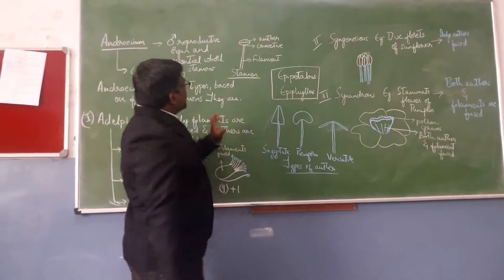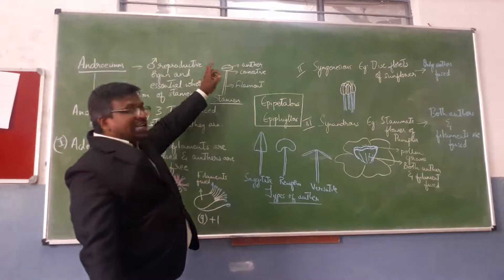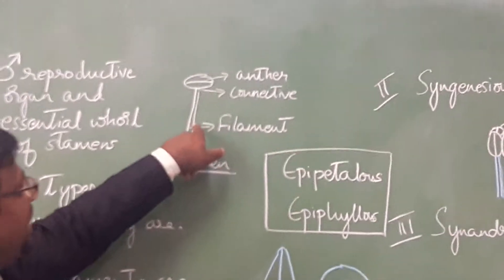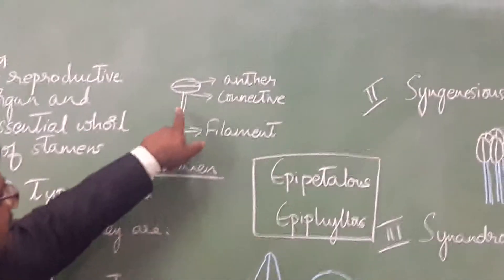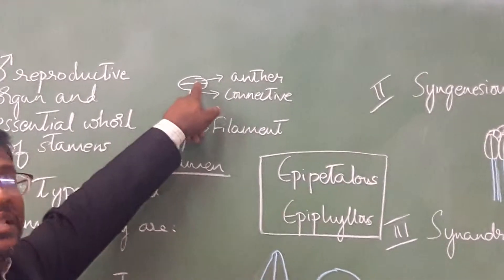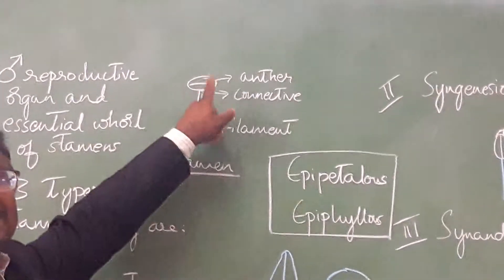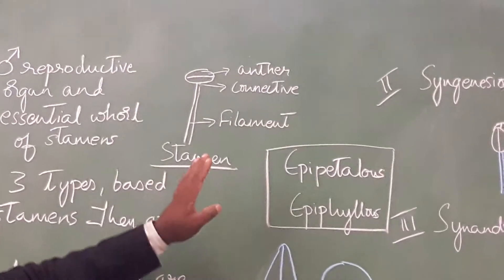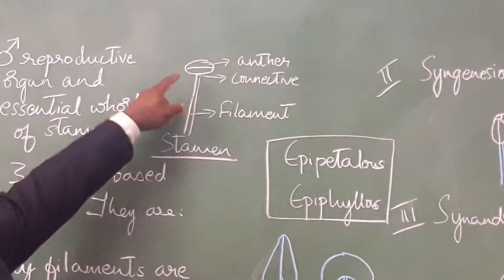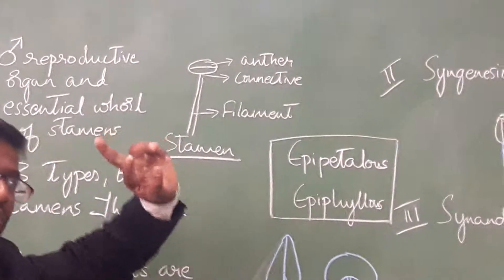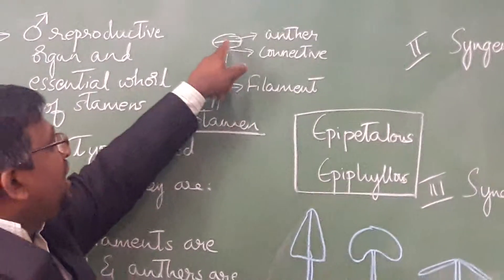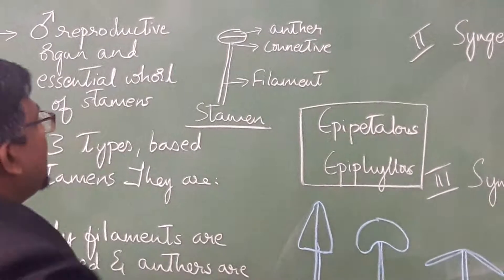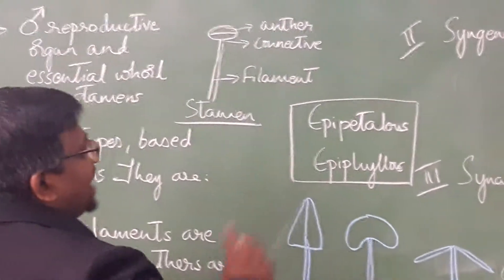A typical stamen consists of an anther and a filament. The point at which the filament connects to the anther is called the connective. The anther has two lobes.